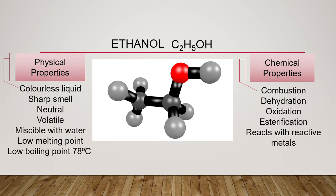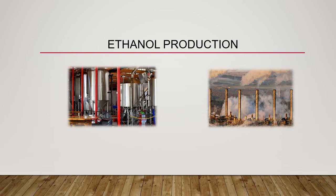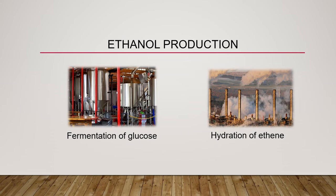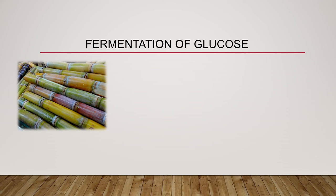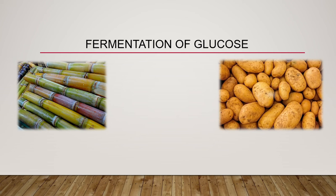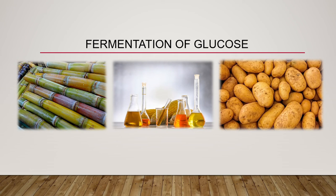Ethanol undergoes the following chemical reactions: combustion, dehydration, oxidation, esterification, and it also reacts with reactive metals. Moving on, let's learn about the production of ethanol. Ethanol is mainly produced by fermentation of glucose and hydration of ethene. The fermentation process has been used since thousands of years ago by mankind to produce ethanol from sugar and starch. Ethanol can be produced using plant sources such as sugarcane, potatoes, and corn.